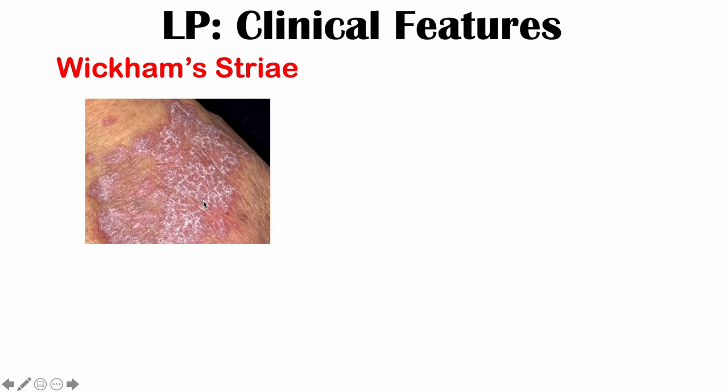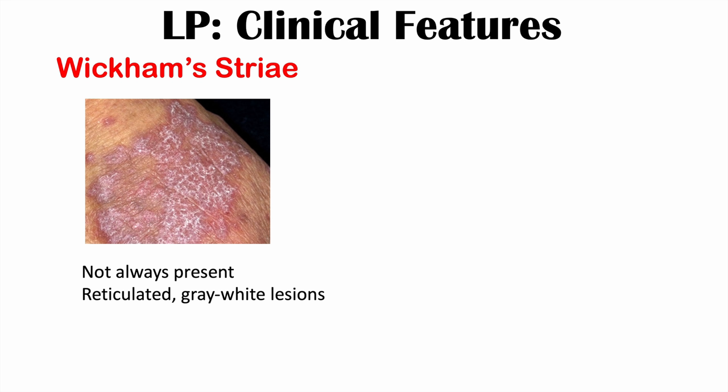One important detail is Wickham's striae — a reticulated gray-white lesion that can appear on top of the skin lesions, essentially looking like white or gray lines. They are firm to palpation. Wickham's striae is not always present, but if seen, it is pathognomonic for lichen planus, meaning the patient definitively has lichen planus.